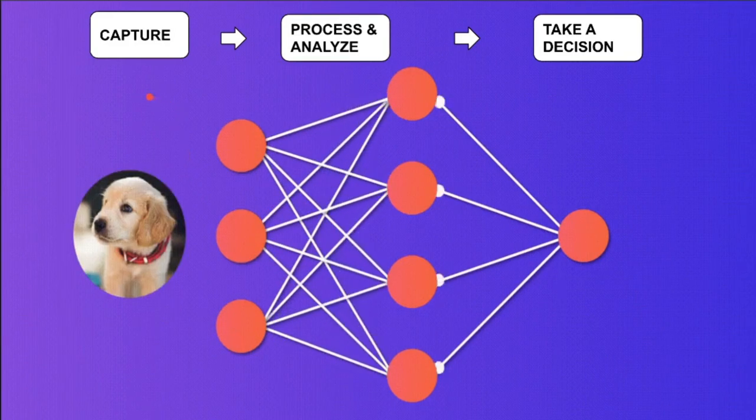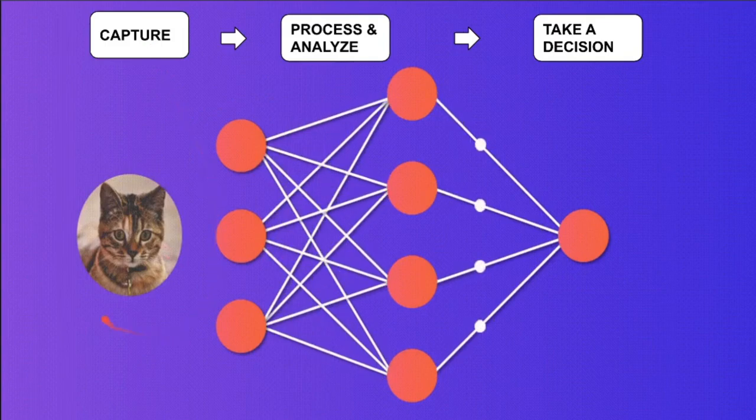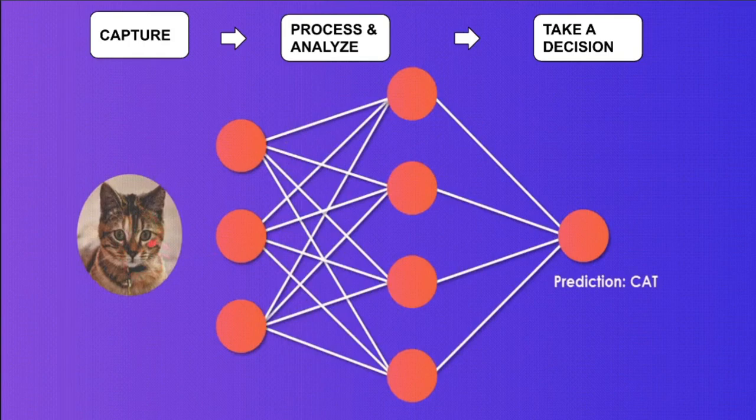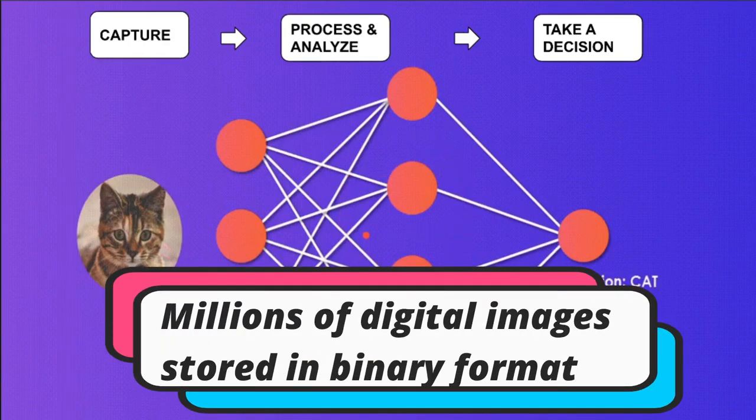Computer vision has a few steps internally. Initially, it has to capture digital images, then process and analyze the data, and finally use this data to make decisions. A simple flow would be: there are digital images, and inside the computer there are millions of digital images in binary format.